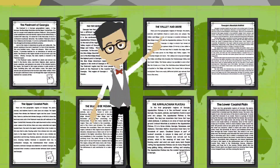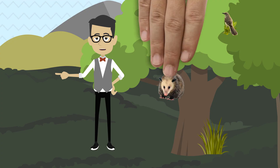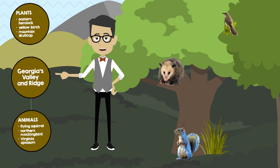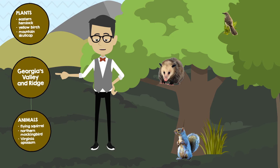The Chattahoochee National Forest has a diverse ecosystem with many different plants and animals. Plants include the eastern hemlock, the yellow birch, and mountain skullcap. Animals include the flying squirrel, the northern mockingbird, and the Virginia opossum.